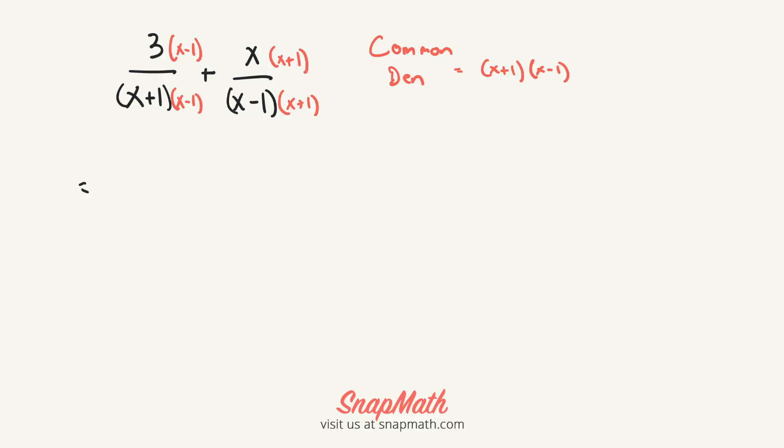The next step would be to distribute. I'll write it all at once: 3x minus 3 and then plus x squared plus x. That's just me distributing the 3 here and then the x here, all over the common denominator which is x plus 1, x minus 1.